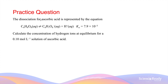The dissociation for ascorbic acid, which is a weak acid, is represented by the following equation. For a weak acid, we have a reversible reaction that reaches equilibrium. The equilibrium constant Ka is 7.9 times 10 to the minus 5. Calculate the concentration of hydrogen ions at equilibrium for a 0.1 mol per liter solution of ascorbic acid.